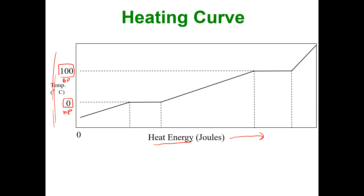So how do we read this heating curve? If I was at negative 25 degrees Celsius, my water hasn't melted yet — I'm in the solid phase. In this region, this is a solid. If I add heat to the solid, it would eventually heat up, and there's going to be a consistent temperature change all the way to zero degrees Celsius.